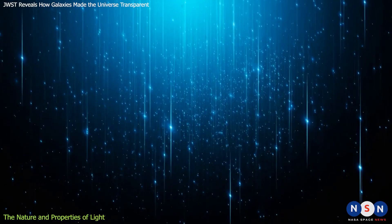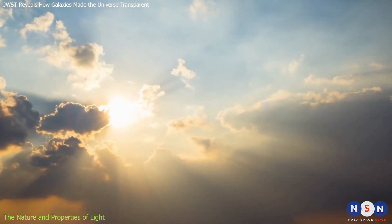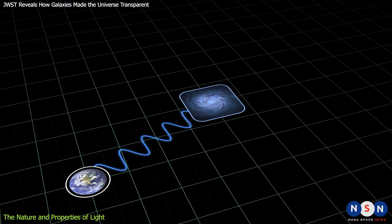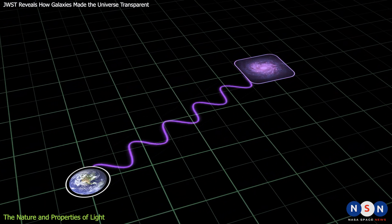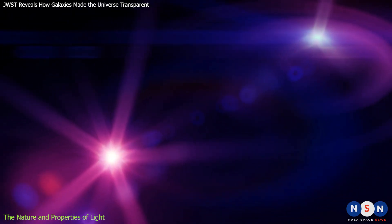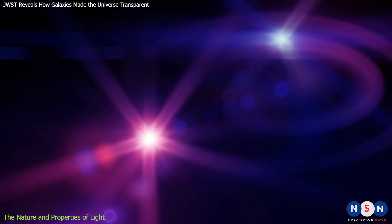But light is not always easy to observe or understand. Sometimes it can be blocked, scattered, absorbed, or bent by different substances or forces. And sometimes it can change its properties depending on the environment it passes through. To understand how light behaves in different situations, we need to know some basic concepts about its nature and characteristics.